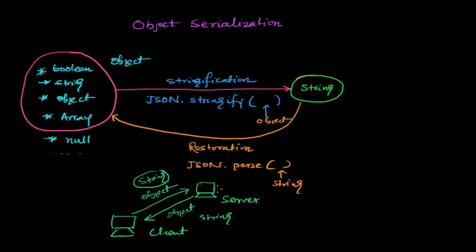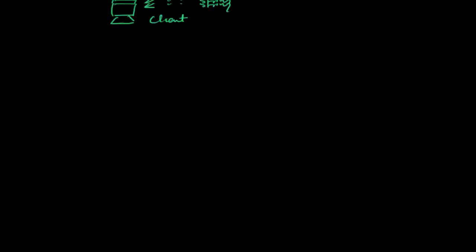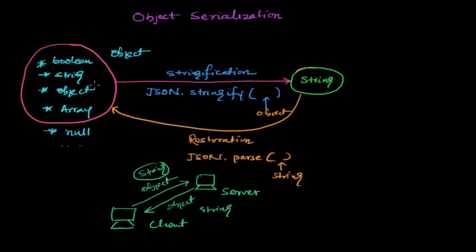After getting this string, the server can again restore it to an object. You can think of it as a compressed form of an object. There are certain exceptions — you cannot convert undefined, infinity, or minus infinity — but in general this is the use of JSON for data interchange between two machines. Now let's look at an example where I make an object and convert it to a string using JSON.stringify.